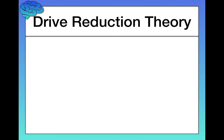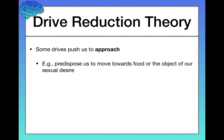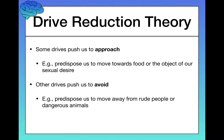Now, pushing us toward a specific direction — some drives push us toward approach. For example, they might predispose us to move toward food, as we just saw, or toward the object of our sexual desire, someone we're attracted to, someone we have a crush on. Other drives, in contrast, push us to avoid — for example, we might want to move away from rude people, or run away from dangerous animals that could threaten our lives.